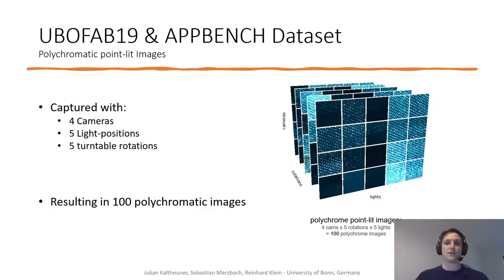To capture the 100 polychromatic images, the scanner uses 4 different cameras, with 5 light positions and 5 rotations of the turntable on which the material is mounted, resulting in these 100 different images.